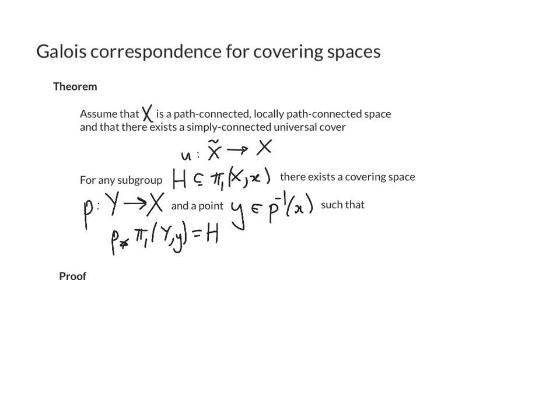So here's how we're going to prove it. There are several steps. First thing we need to do is to observe that the deck group of x tilde is, if we remember from an earlier video on the deck group, it's equal to pi 1 of x.